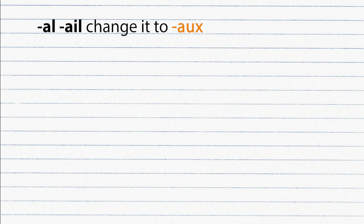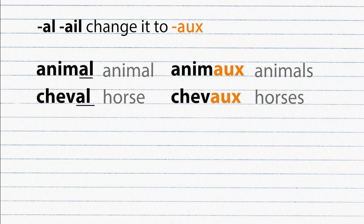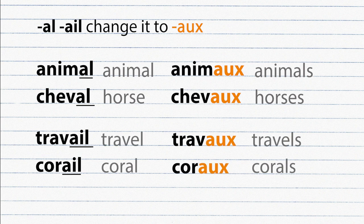We change the ending to AUX. Animal, animaux. Cheval, chevaux. Travail, travaux.